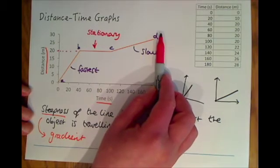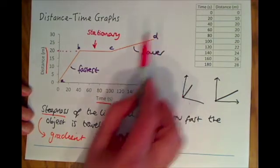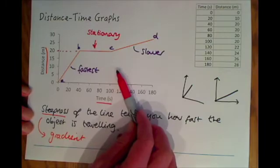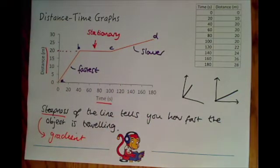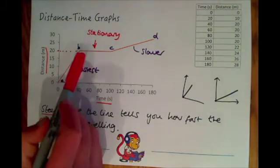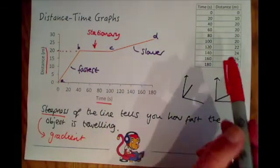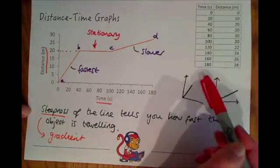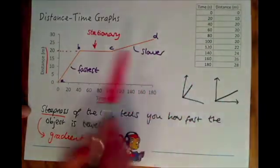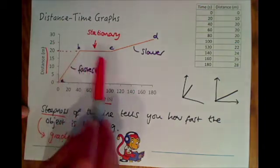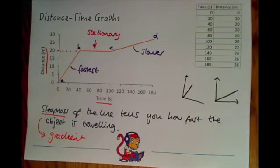In the exam for example they might talk about a bus or something like that and they might say at which point is the bus stopped and picking up passengers. You need to look for flat points on the graph which will show this idea. So for foundation you need to be able to draw them using information in the table and then pick out at which point the object is travelling fastest and slowest and which point they are stationary and not moving.